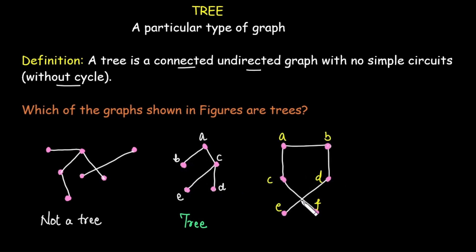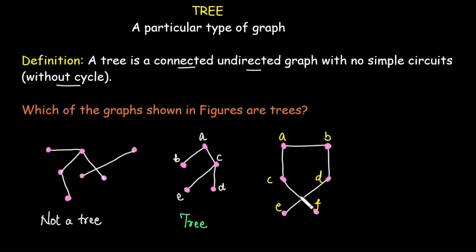The third graph: is it connected? Yes. Undirected? Yes. Is there any simple circuit present? No. Be careful — do not confuse the crossing of edges with a cycle. The intersection of edges here does not represent a vertex, so it doesn't form any kind of cycle. Thus we can call this graph a tree.